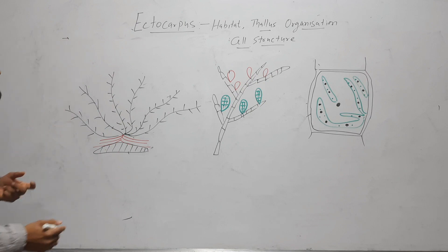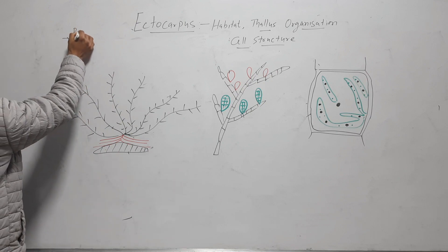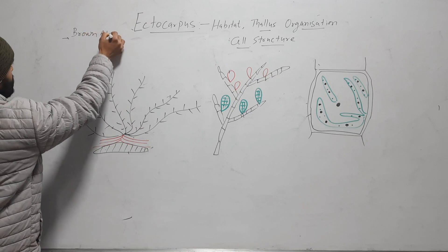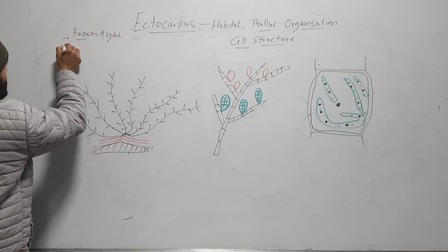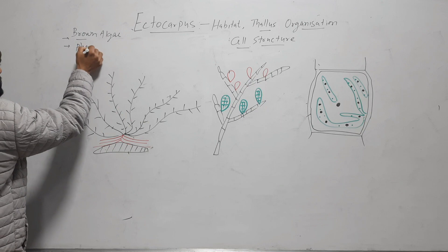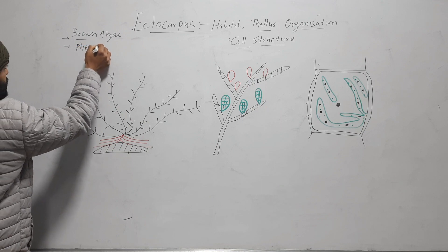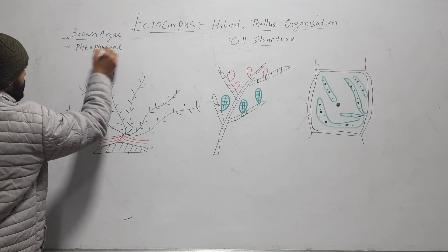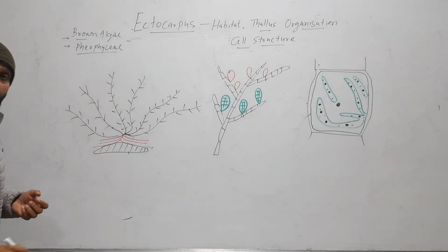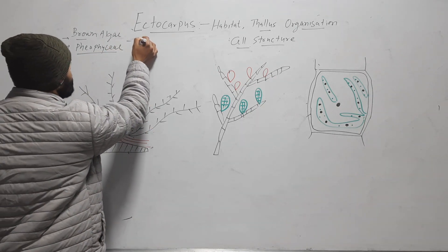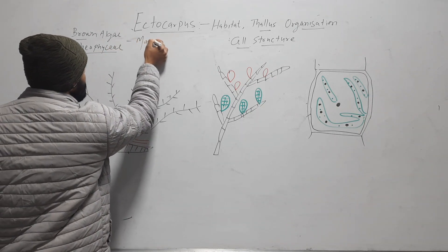This Ectocarpus is a brown alga that comes under Phaeophyceae. Ectocarpus is marine, so it has a marine habitat.